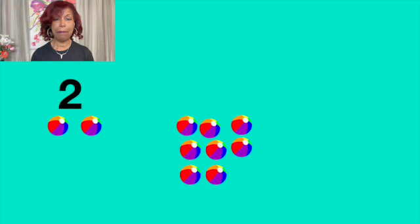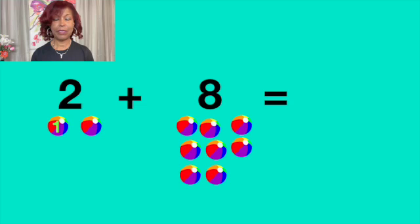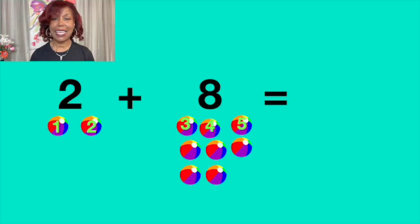Dos más ocho igual a diez. Two plus eight equals to ten. Vamos a contar. Let's count. Uno, one. Dos, two. Tres, three. Cuatro, four. Cinco, five. Seis, six. Siete, seven. Ocho, eight.